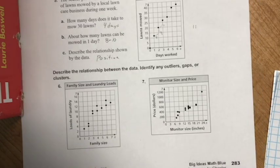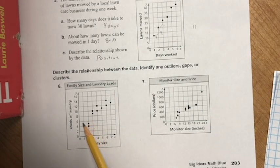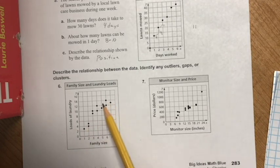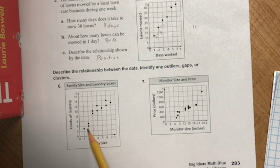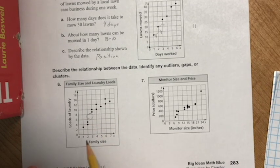Number six: describe the relationship, and identify any outliers, gaps, and clusters. Outliers are data points that don't follow the group; gaps are spaces in the data; clusters are data points bunched together. Looking at this scatter plot, there does appear to be a positive correlation. There are no major outliers, but there does seem to be a gap in the data where the values suddenly jump up.